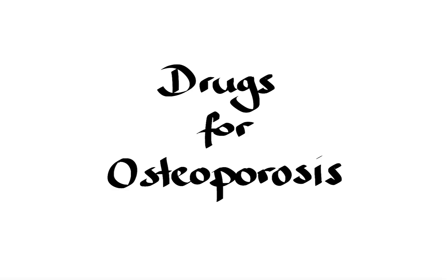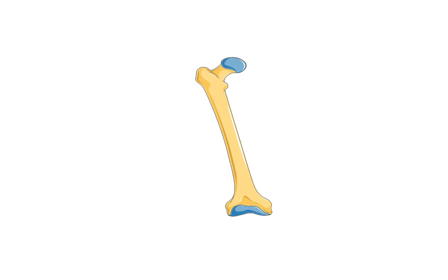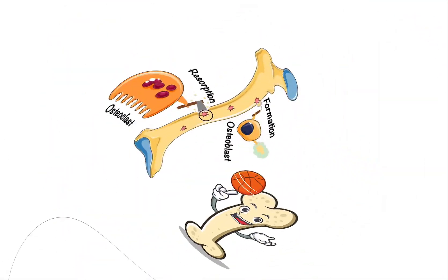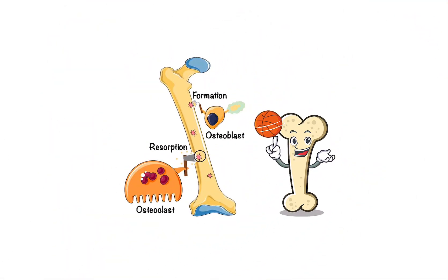Bone remodeling is a continuous process that occurs throughout our lives and is essential for maintaining healthy bones. It involves two main types of cells: osteoclasts, which are responsible for breaking down bone tissue in a process known as resorption, and osteoblasts, which build new bone tissue in a process known as formation. In healthy individuals, these processes are well balanced, maintaining bone mass and density.